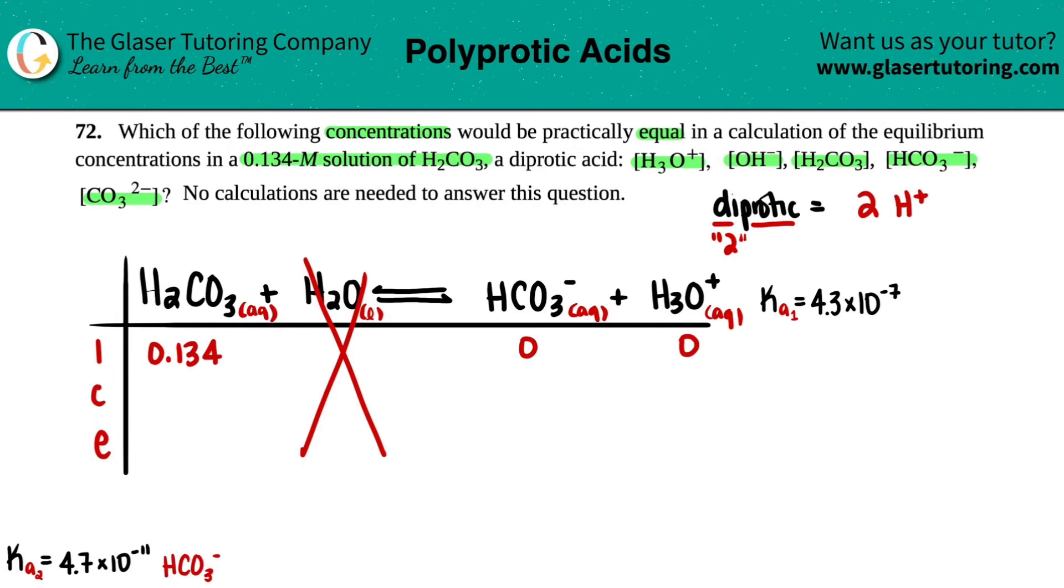C stands for change. You can only go up from nothing. So if you see that you have a zero on one side of your equation, you could always and only go up from there. So the products would have to be plus and the reactants would be minus. Do we know the change at the moment? No. So we'll call it X's. So minus X plus X and plus X. And then equilibrium just brings the two together. 0.134 minus X. So 0.134 minus X. 0 plus X is just X. And 0 plus X is just X.